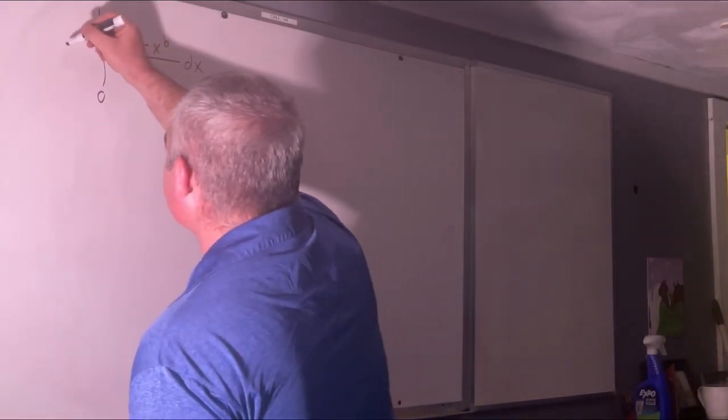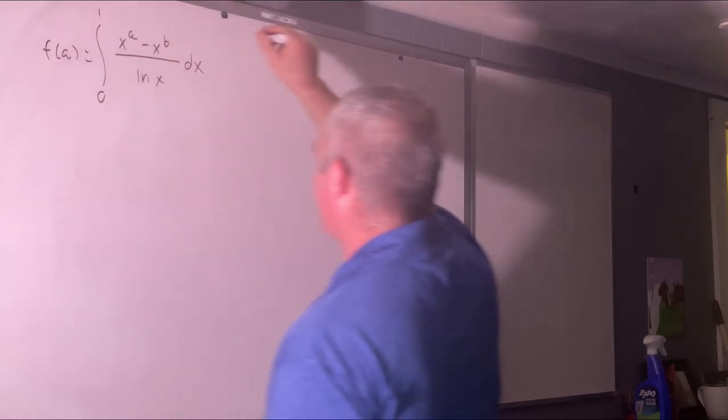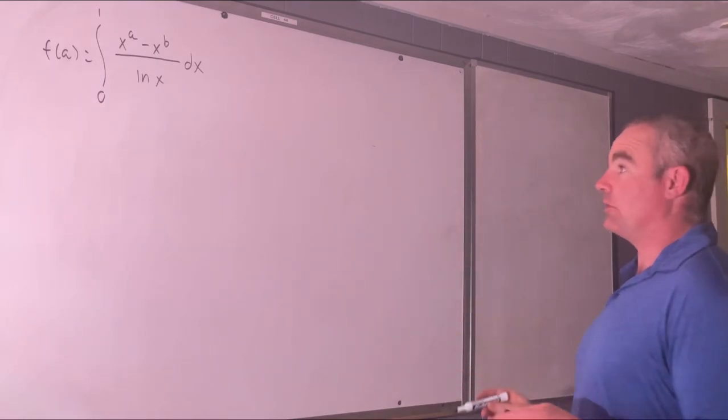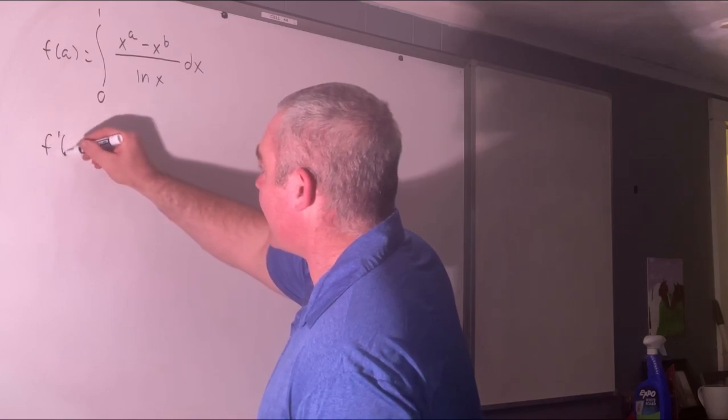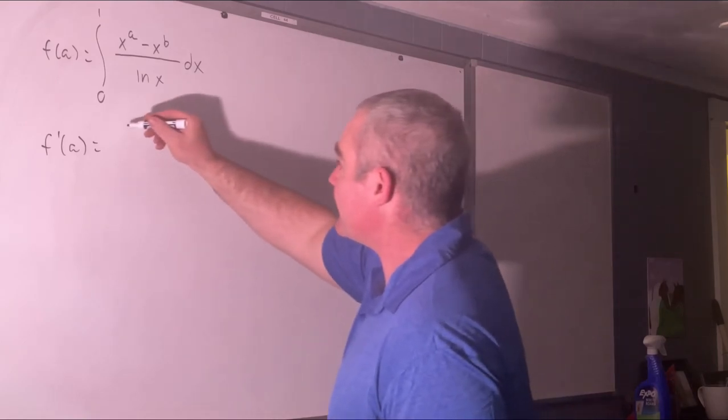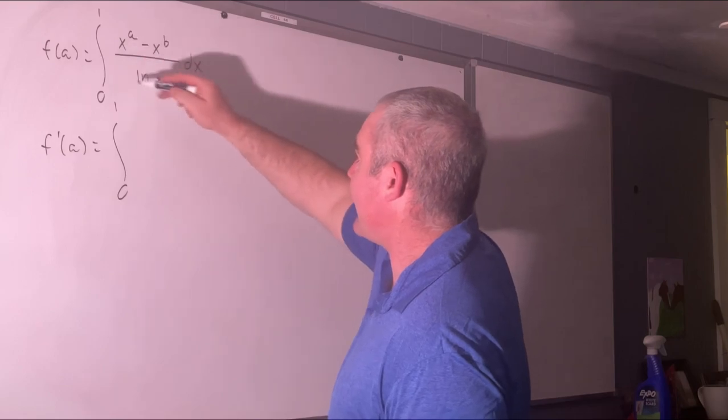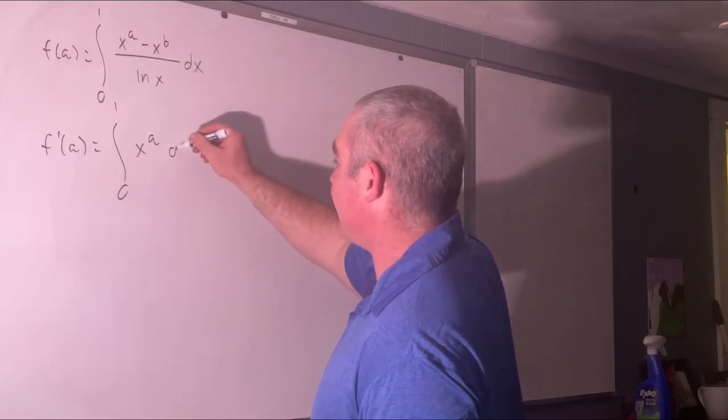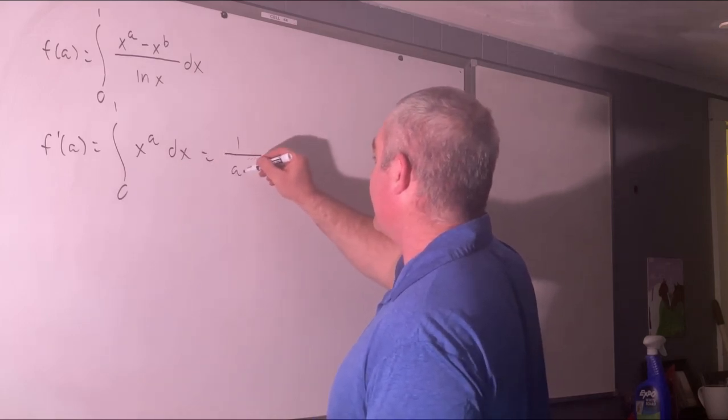First of all, let's call this a function of a and we'll hold b constant. So b is an arbitrary constant and a is our variable now. Let's take f prime of a using the Leibniz rule for differentiation under the integral sign. This will be equal to the integral from 0 to 1 of the partial with respect to a of the integrand which will simply be x to the a and that is equal to 1 over a plus 1.